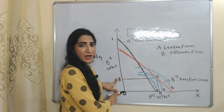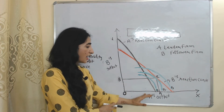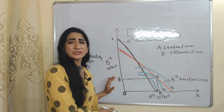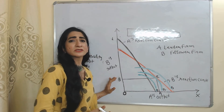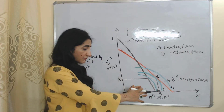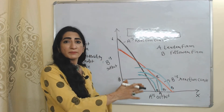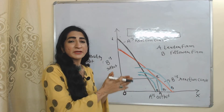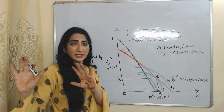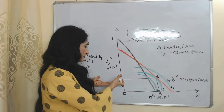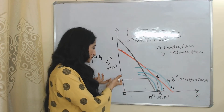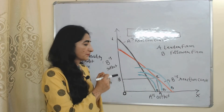At this E point, you can see the output of A is OA and the output of B is OB. The output of B is less than the output of A. Obviously B will produce less because B is the follower firm, but A will produce more because A is the leader firm and has been in the market for many years.